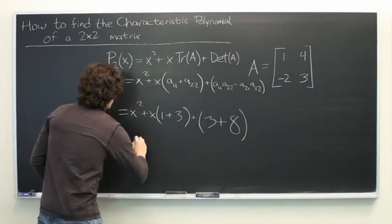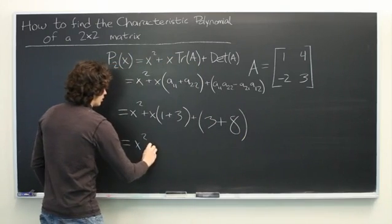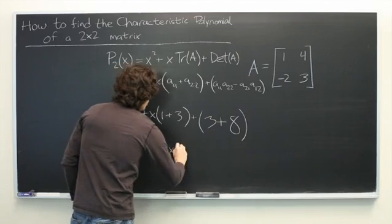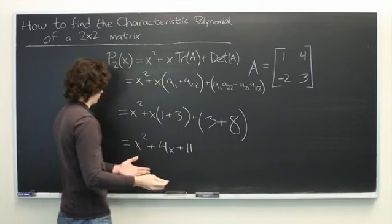So, this becomes x squared plus 4x plus 11. There we have it.